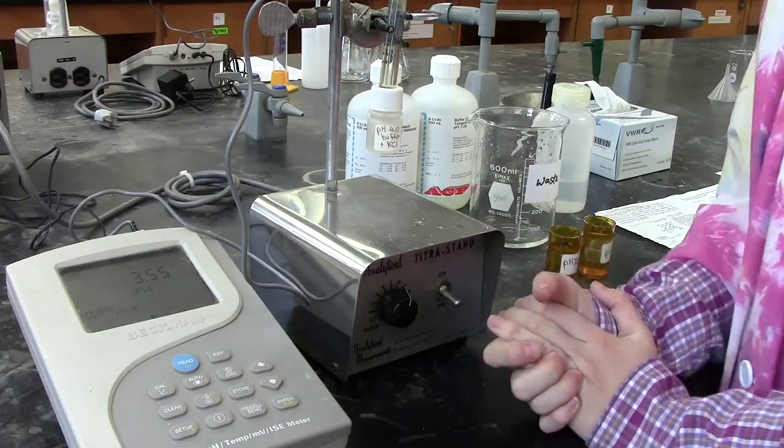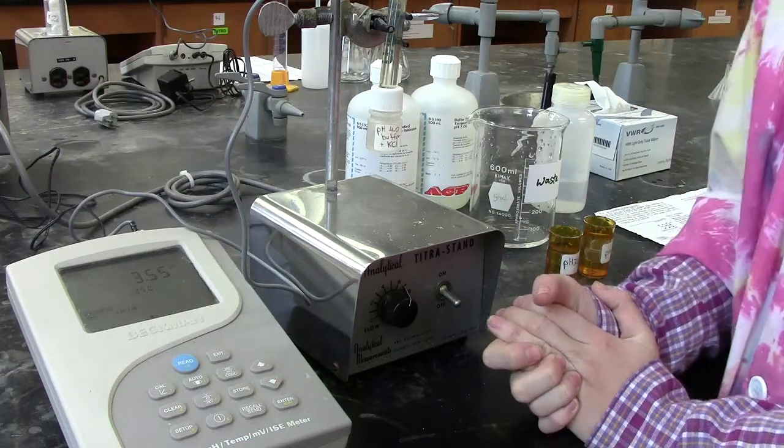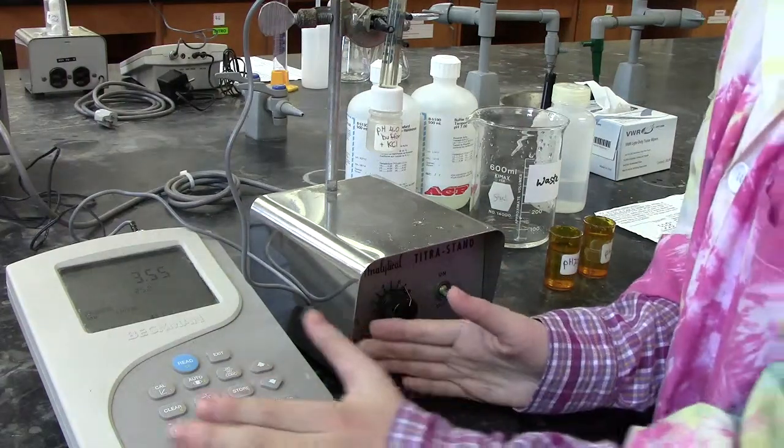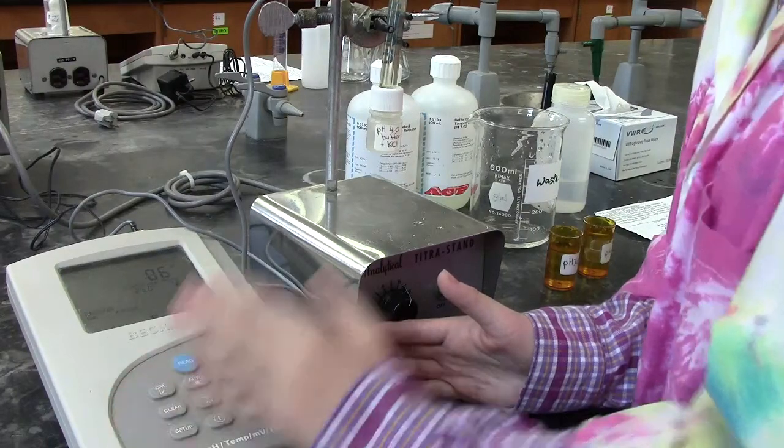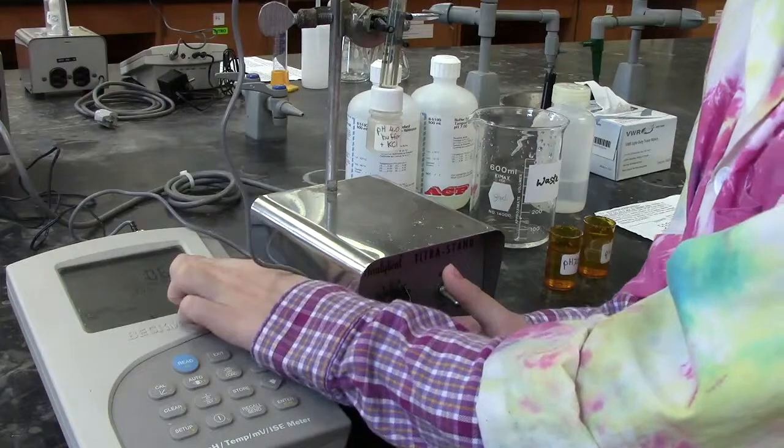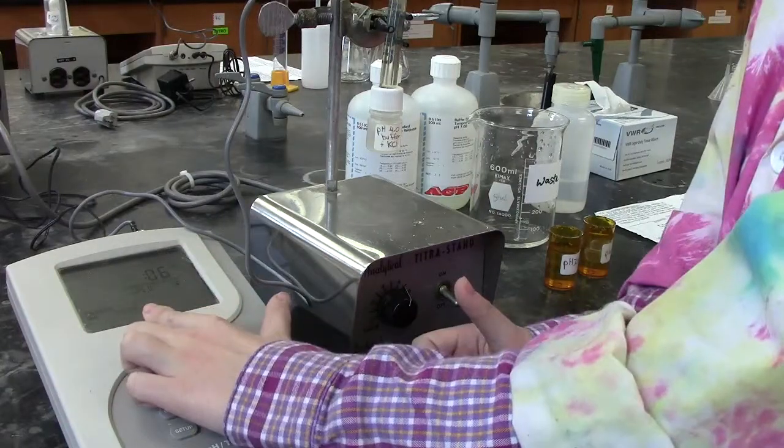Once the pH meter is on, we must first calibrate the pH meter. This is done by pressing cal. We can see that the pH meter is now in calibration mode, but it has been previously calibrated.